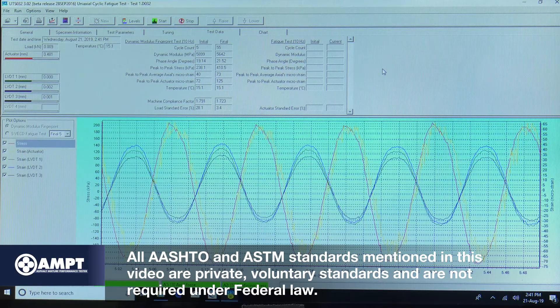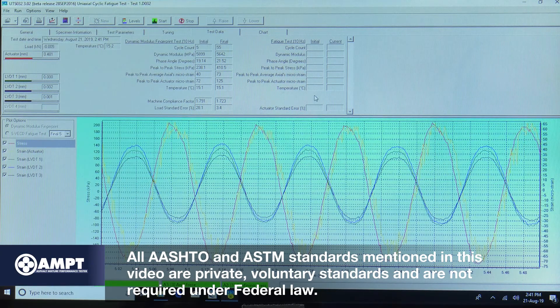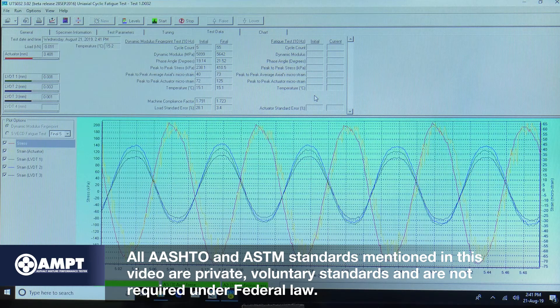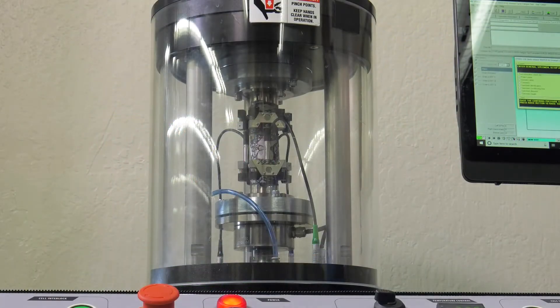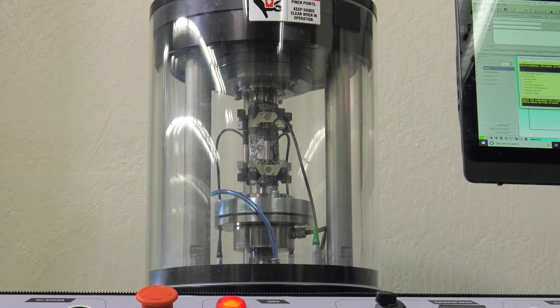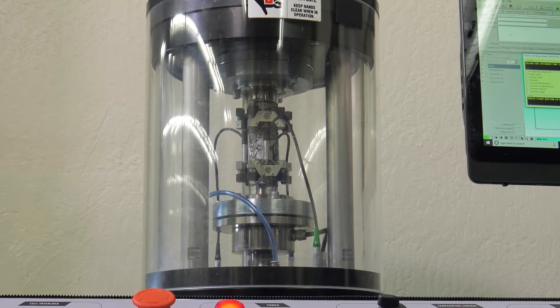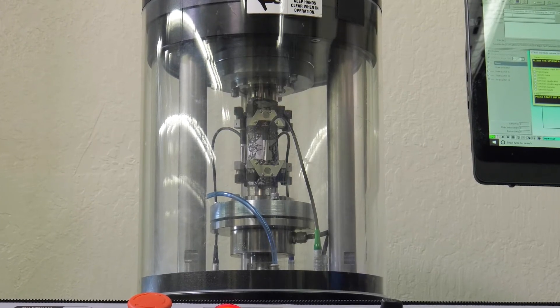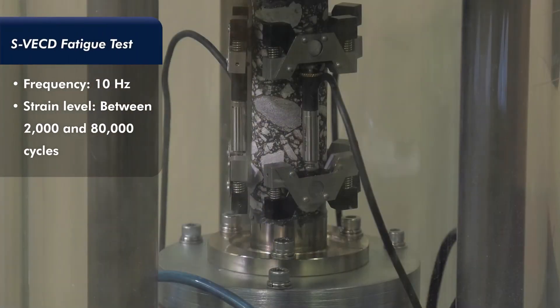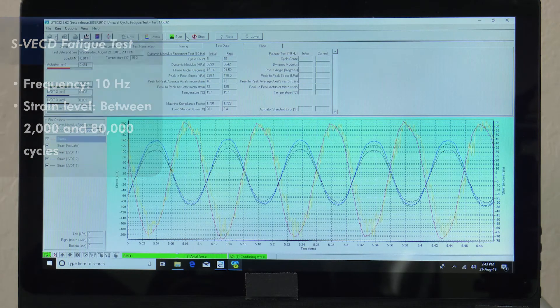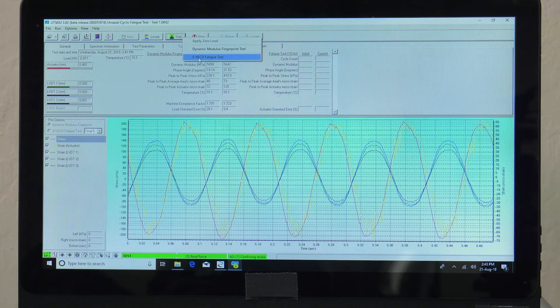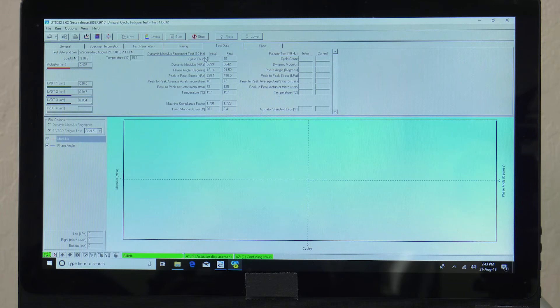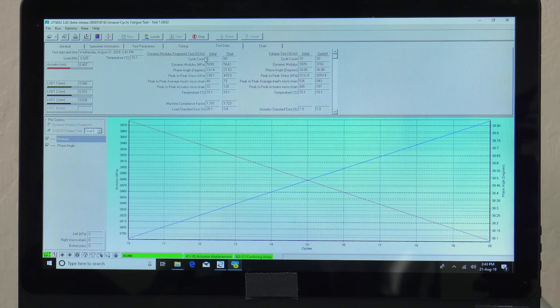According to the current AASHTO recommended standard, record a minimum of 50 data points per cycle. The test specimen will rest at a zero-Newton load for a minimum of 20 minutes following the fingerprint testing. Perform the cyclic fatigue test at 10 Hz using a strain level that will result in a test length between 2,000 and 80,000 cycles. Allow the test to run until a clear peak in the phase angle versus number of cycles curve is observed.